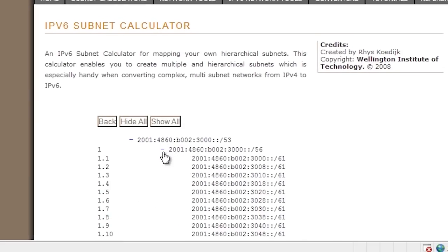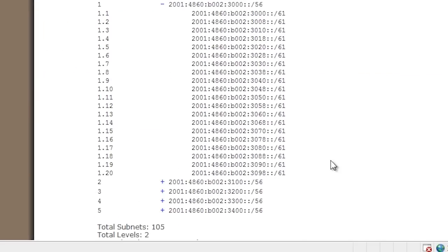If I expand down to the second level, notice the sequence of subnets starts from 0, then 8, 10, 18, 20 and so forth.